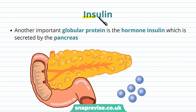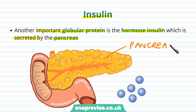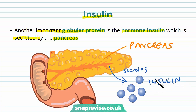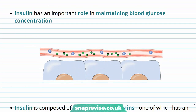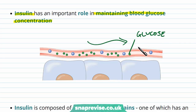Another example of a globular protein is insulin, which is important because it is a hormone. The hormone insulin is made and secreted by the pancreas, an organ found near the small intestine as part of the digestive system. The role of insulin is to help maintain blood glucose concentration. Glucose travels around the blood as it is soluble, delivering energy to all of our tissues, but the glucose level must be very tightly controlled, because if it is too high or too low it can be dangerous. So insulin travels in the blood to help control this.